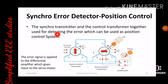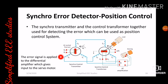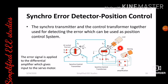The synchro transmitter and the control transformer together are used for detecting the error, which can be used as a position control system. The error signal is applied to the differential amplifier, which gives the input to the servo motor. The output of the AC amplification device is connected to the servo mechanism.